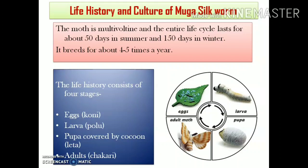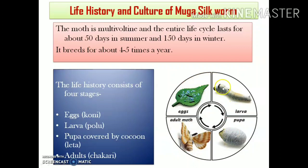The entire life cycle lasts about 50 days in summer and about 120 to 150 days in winter. The life cycle consists of four main stages: eggs, larvae, pupae, and adults. In the local language, eggs are termed coni, larvae are termed pollu, pupae covered by cocoon are termed leta, and adult moths are termed chakari.